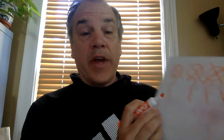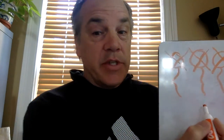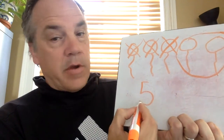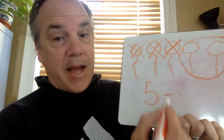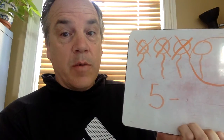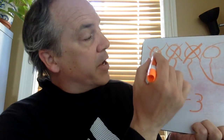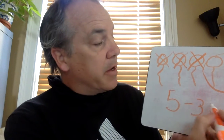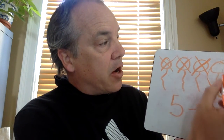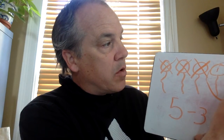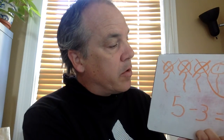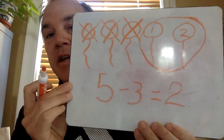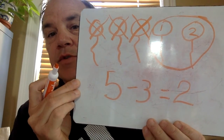How many are left? So I can write the equation. How many balloons did I start with? And then I'm going to subtract how many popped — one, two, three. How many are left? Five minus three equals two.